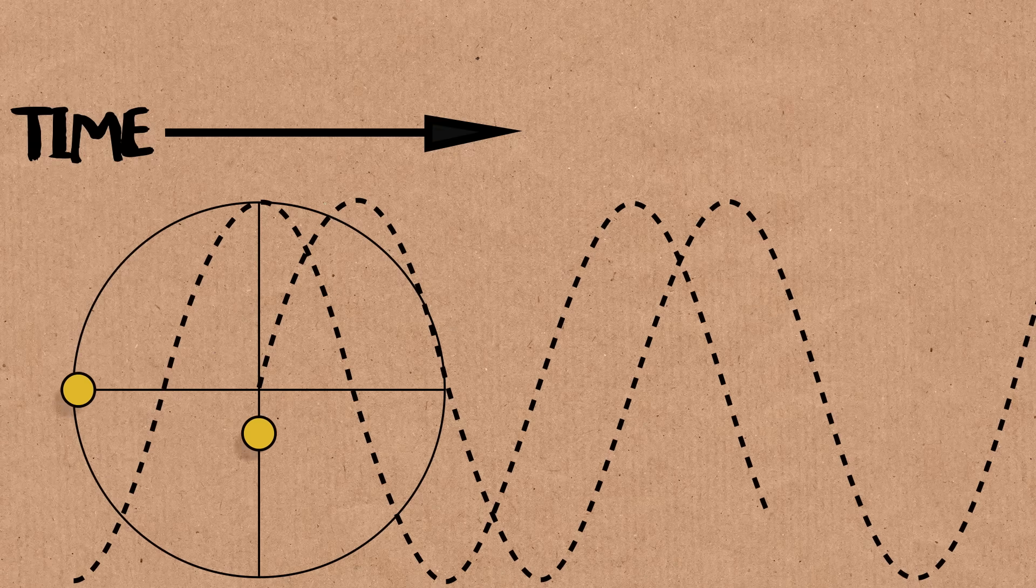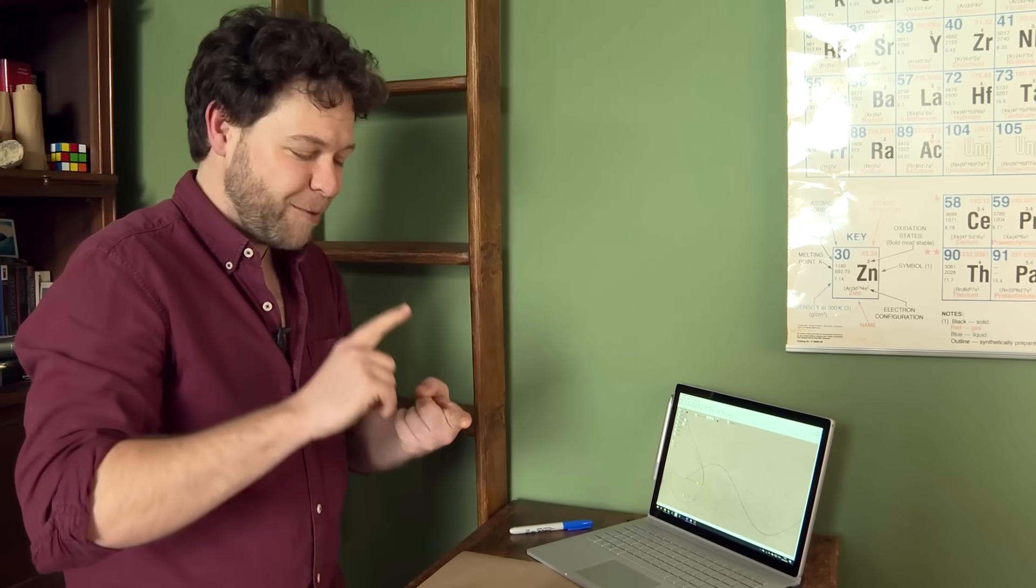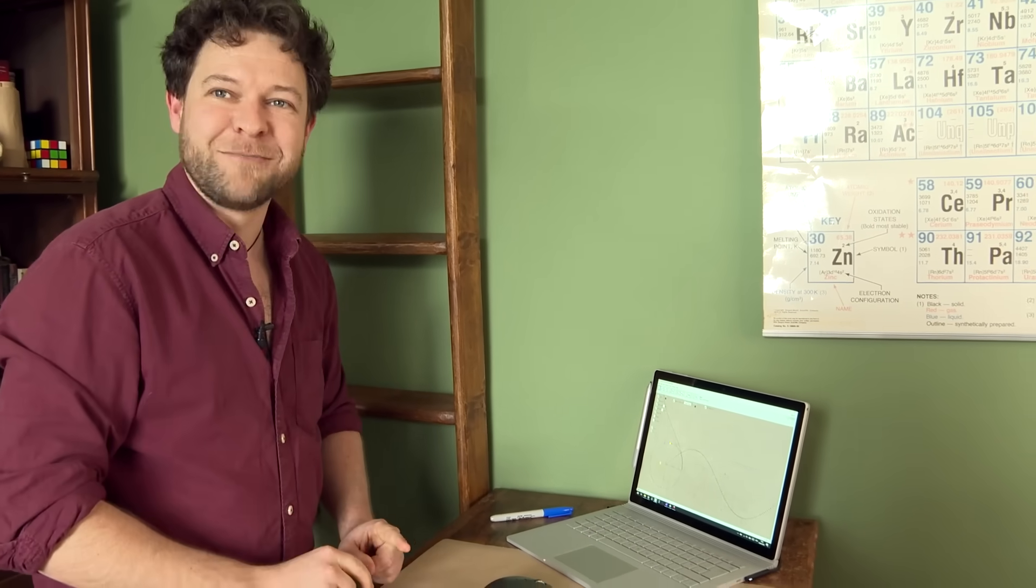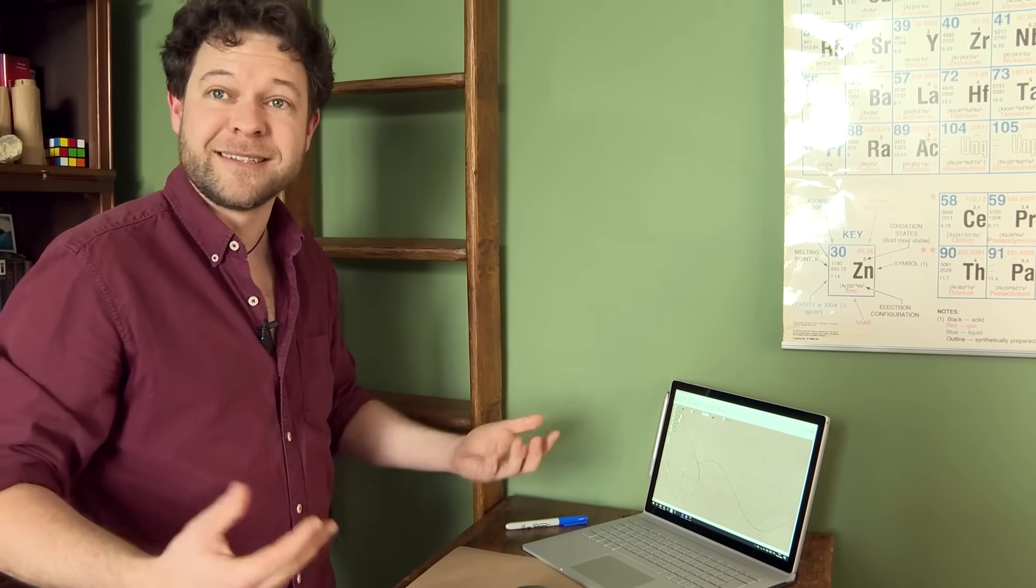So sine and cosine as functions, or as mathematical objects, are precisely the y-coordinate and x-coordinate of a point moving in a circle. That's why they're important, because almost everything that goes in a cycle or repeats ever, i.e. most things, are described by circles and therefore described by trigonometry.